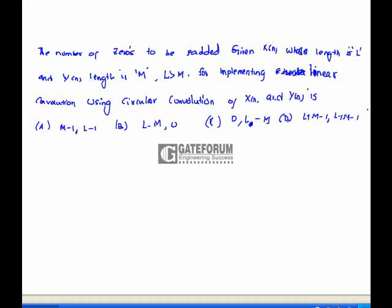For the number of zeros to be padded: given x(n) of length L and y(n) of length M, where L > M, to implement linear convolution using circular convolution, we need to know the length of the linear convolution of x(n) and y(n), which is L + M − 1. For circular convolution, x(n) and y(n) must be of equal length.